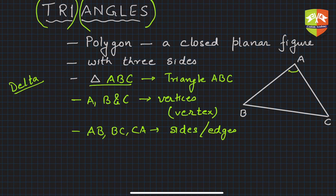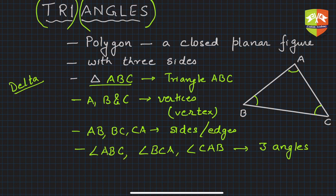We have three angles: angle ABC, angle BCA, and angle CAB. These are three angles. We also name them using numerals - angle 1, angle 2, angle 3.